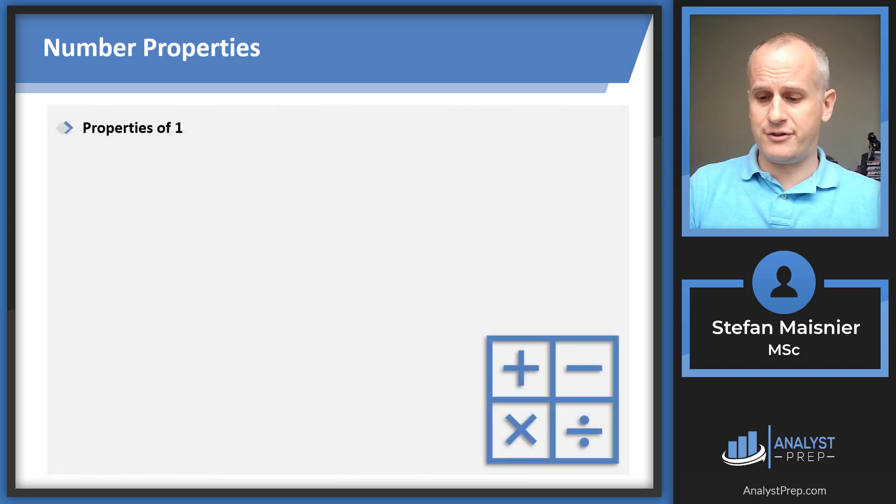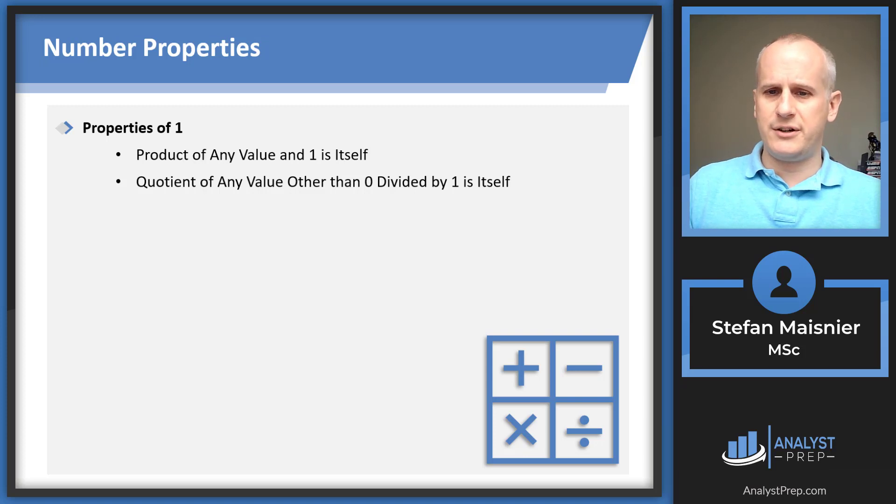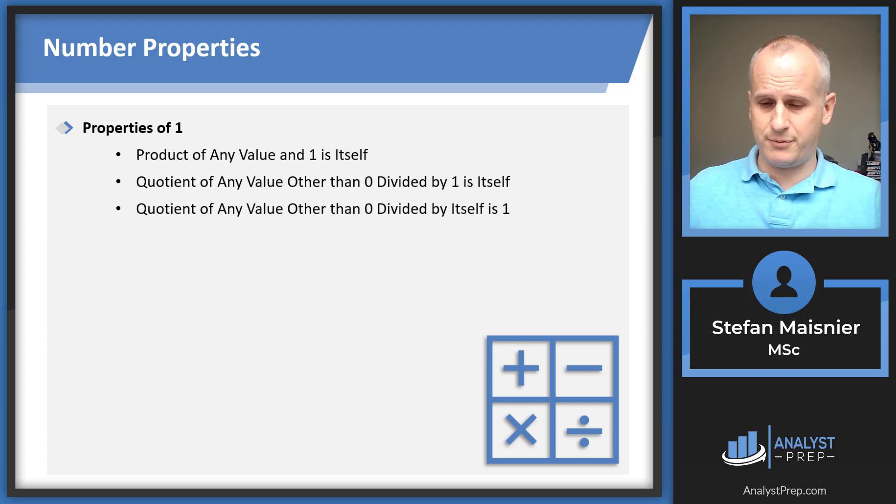Now let's talk about some specific integer values that have very unique properties starting with the value of one. The product of any value and one is itself. Two times one is one. X times one is X. The quotient of any value other than zero divided by one is itself. Two divided by one stays two. X divided by one stays X. If you are looking at an integer, it technically has a tacit denominator of one and a tacit multiplier of one. It's just the nature of arithmetic. The quotient of any value other than zero divided by itself is also one. 12 divided by 12 is going to be one. X divided by X is going to be one. And the implicit exponential value of any number is also one. If you're just looking at two on the screen, you're looking at two to the first power.